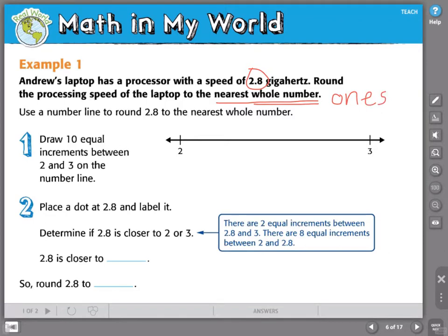Now if I look at 2.8 gigahertz, I can say, well that number is bigger than 2 and smaller than 3. I'm going to use a number line to help me round. They've given me a number line and they've marked 2 and 3. We're going to draw 10 equal increments between 2 and 3 on the number line. Why 10? Well because we have a base 10 number system and this is 8 tenths. That means 8 out of 10 equal increments between 2 and 3.